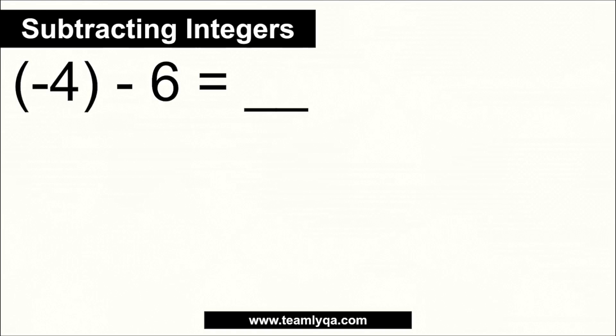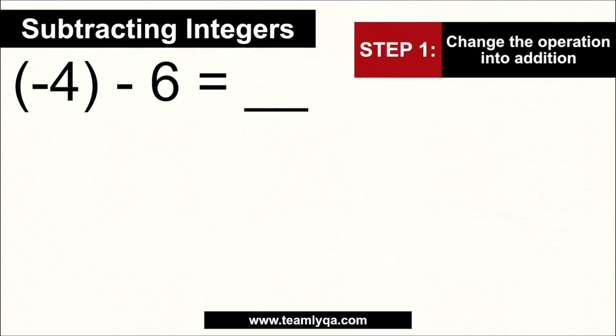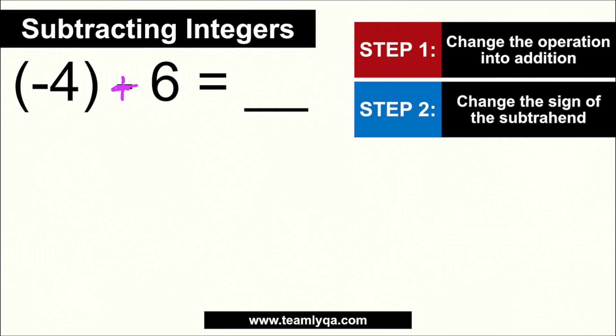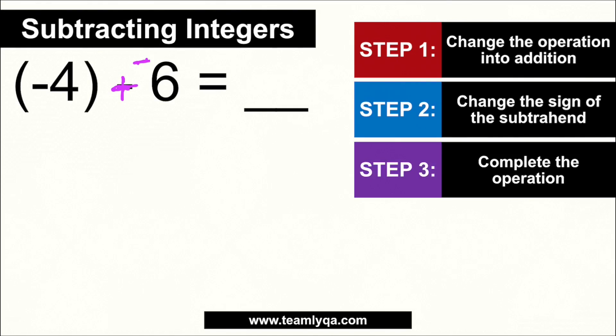Now, what if the negative comes first — negative 4 minus 6? First thing: change the operation into addition, so it becomes negative 4 plus 6. Then change the sign of the subtrahend — 6 becomes negative 6. Now we have negative 4 plus negative 6. They have the same sign, so add them: 4 plus 6 is 10. Copy the sign — the answer is negative 10.